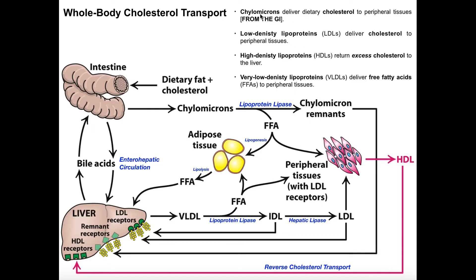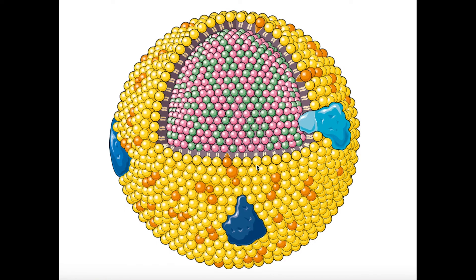Let's start at the beginning. From the diet we get fat — triglycerides, fatty acids, and cholesterol. Those navigate through the GI tract and eventually in the intestine, particularly the jejunum, they're going to be absorbed. When these fats and cholesterol are absorbed, they enter cells called enterocytes. Enterocytes are going to package them into chylomicrons, which is basically just a lipoprotein but functions a little differently than the others.